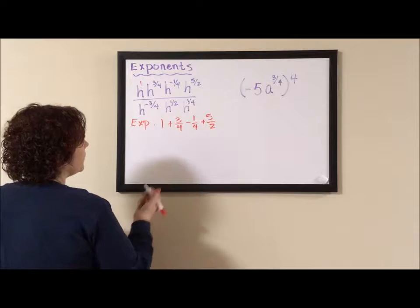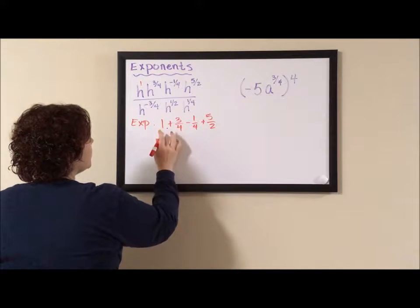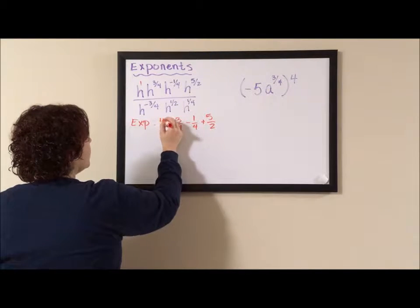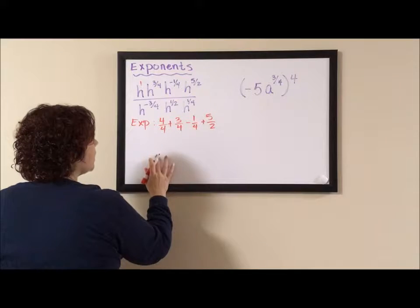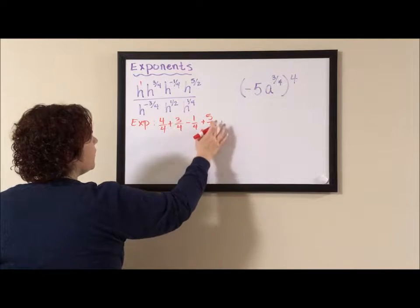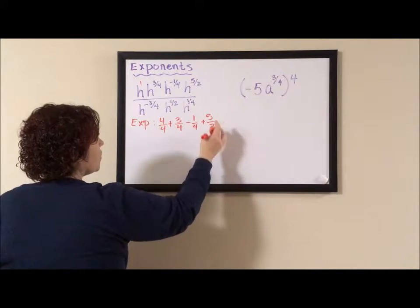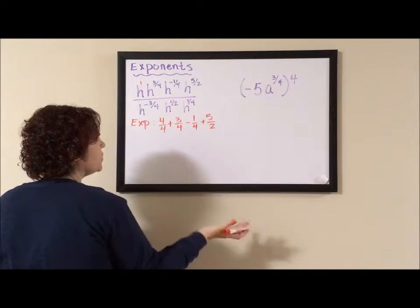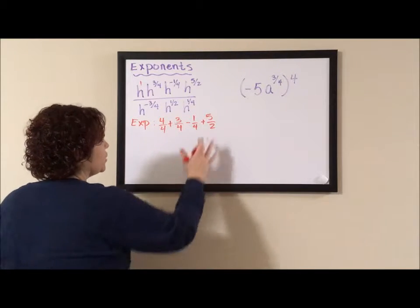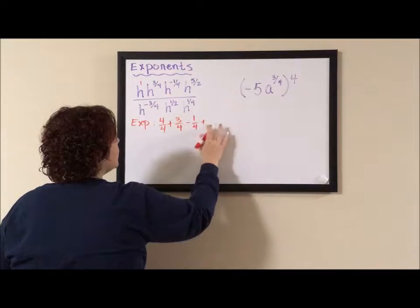You have to remember there's a one there. So I'm going to turn this one into four over four. I'm going to turn this five halves into ten fourths by multiplying by two, numerator and denominator, to get an equivalent fraction. So I'm going to turn this into ten over four.